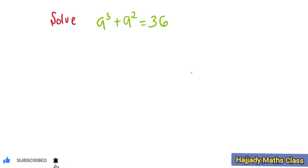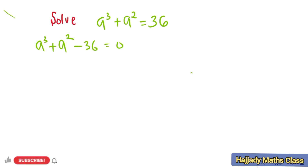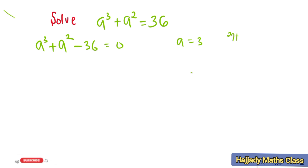So in solving this, we have that a raised to the power 3 plus a raised to the power 2 minus 36 equals 0. We are going to look for the root of the equation for a, and from here when we substitute a equals 0, 1, and 2, we can see that we're not going to get 0. So when a is 3, we can get that a is one of the roots of the equation, that is a raised to the power 3 is 27 plus a raised to the power 2 which is 9, minus 36 is going to give us 0. This shows that a is one of the roots of the equation.